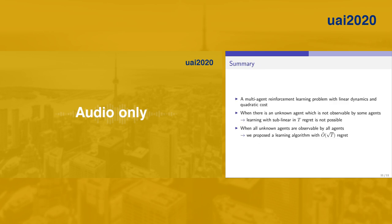This brings me to the end of this talk. To summarize: we studied the multi-agent reinforcement learning problem with linear dynamics and quadratic cost. We showed that when there is an unknown agent which is not observable by some agents, sublinear regret is not possible.